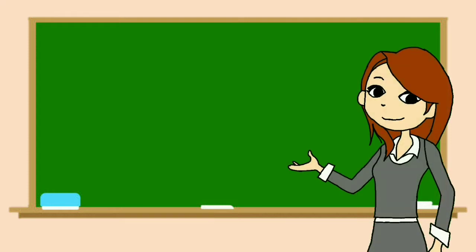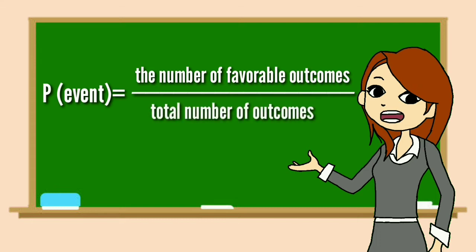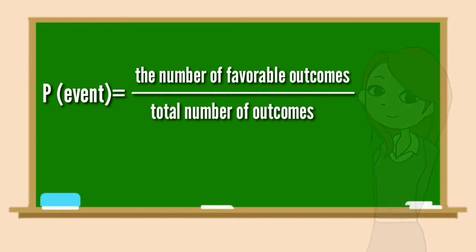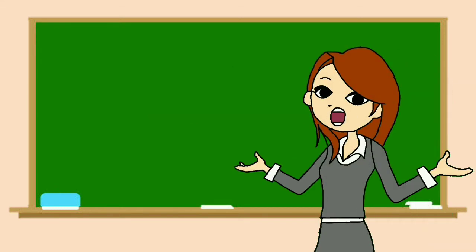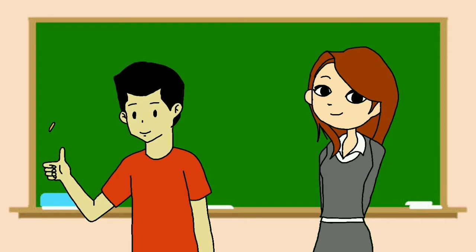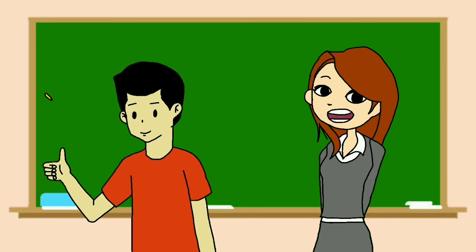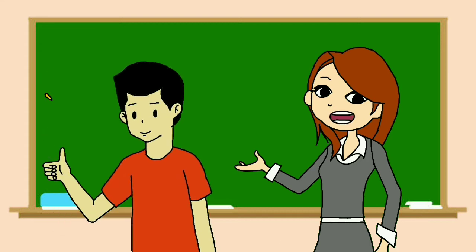Of course, we can also be guided with the formula. Please remember: the probability of an event is equal to the number of favorable outcomes divided by the total number of outcomes.